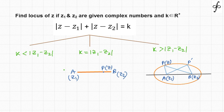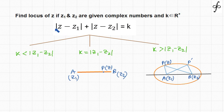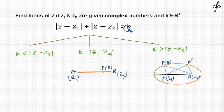Let's take a complex numbers locus problem. The question says: find the locus of z, where z1 and z2 are given complex numbers and k belongs to R+, satisfying the condition |z - z1| + |z - z2| = k. As you know, |z - z1| represents the distance between z and z1, and |z - z2| represents the distance between z and z2. So the sum of distances equals a constant positive real number k.